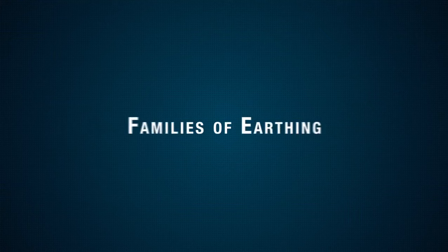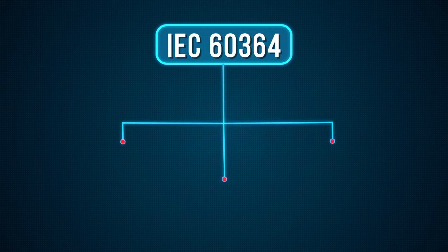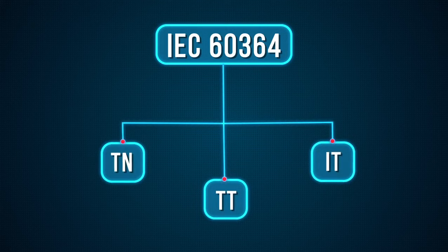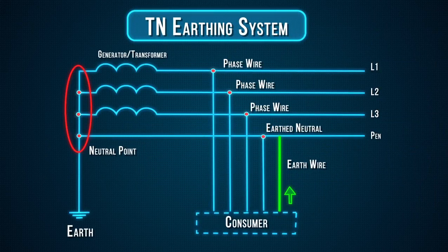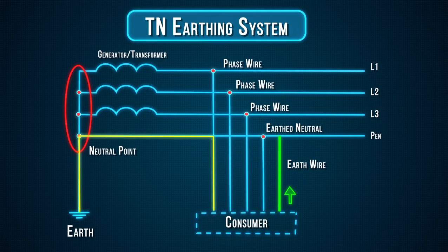Families of earthing. International Standard IEC 60364 distinguishes three families of earthing arrangements using the two-letter codes TN, TT, and IT. In a TN earthing system, one of the points in the generator or transformer is connected with earth, usually the star point in a three-phase system. The body of the electrical device is connected with earth via this earth connection at the transformer.